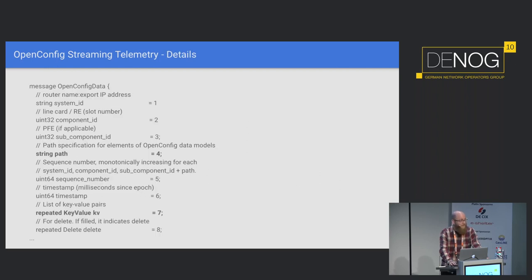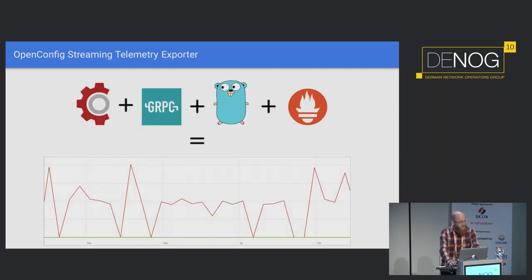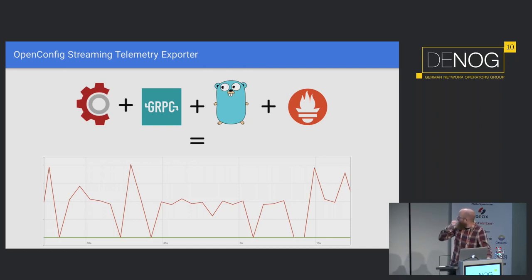This is what an OpenConfig data message looks like. The two most important parts are the path, which is a string built like a filesystem path — identified with slashes and labels — and then there is a key and a value for this path. In the picture we have OpenConfig streaming telemetry using gRPC with Golang to put the data into Prometheus, and what you get is a nice graph with a fairly high resolution. If you look at the x-axis, there is a timestamp for basically every second, so I have a scrape interval of two seconds — that is the resolution of the metrics I'm getting out of the router.